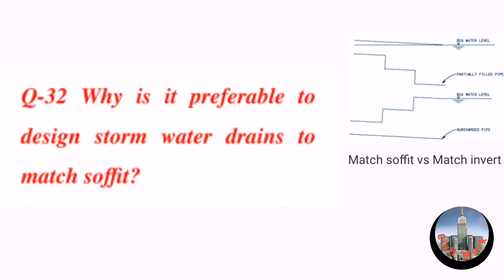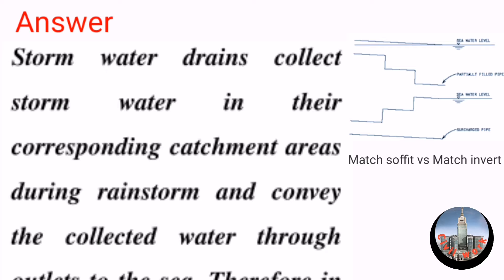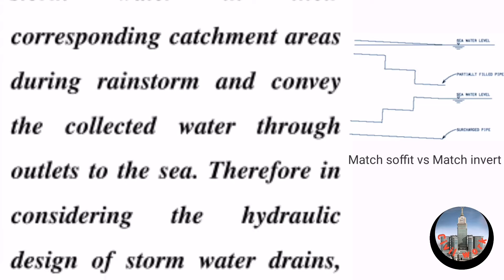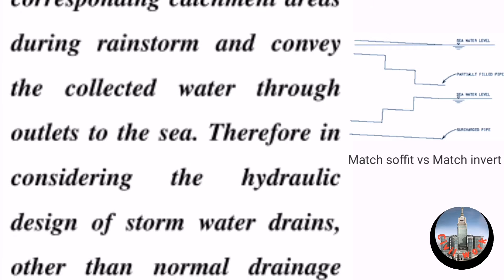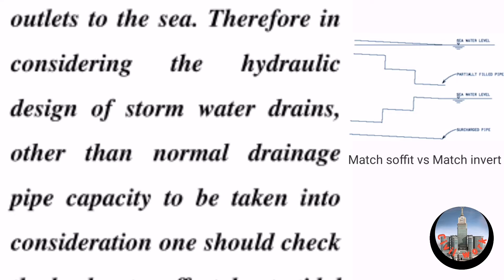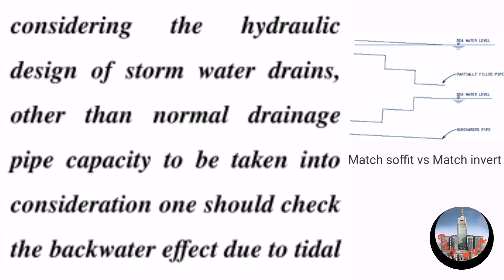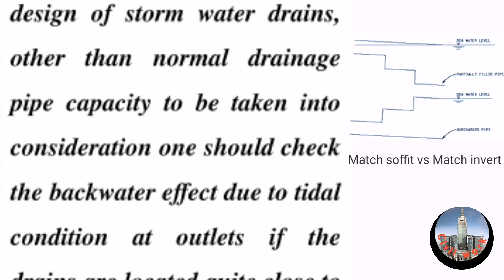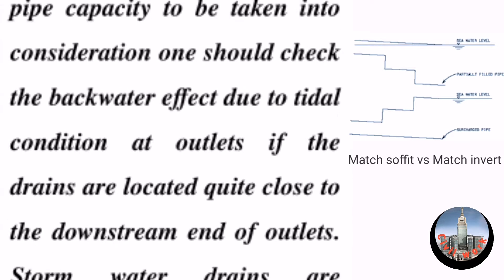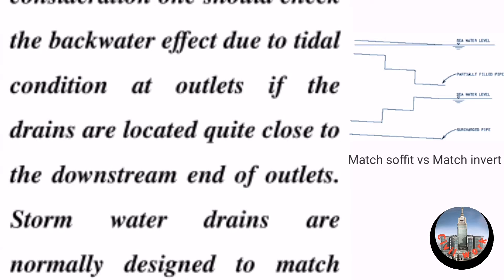Question number 32: Why is it preferable to design stormwater drains to match soffit? Stormwater drains collect stormwater in their corresponding catchment areas during rainstorms and convey the collected water through outlets to the sea. Therefore, in considering the hydraulic design of stormwater drains, other than normal drainage pipe capacity, one should check the backwater effect due to tidal conditions at outlets if the drains are located quite close to the downstream end of outlets.